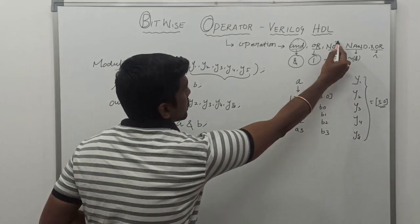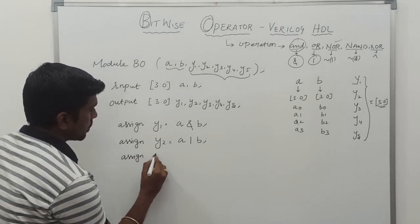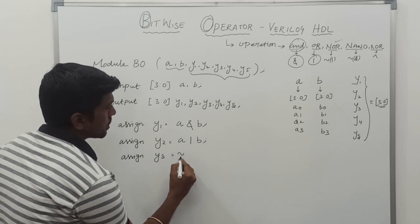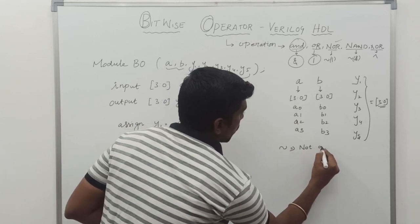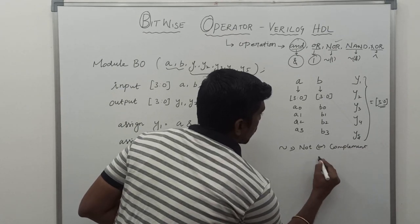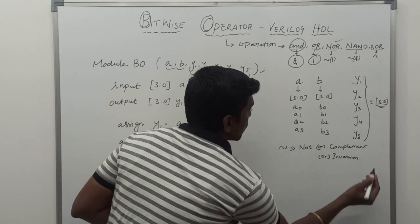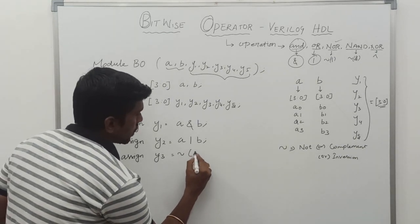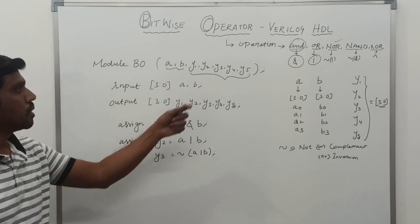The third operation is NOR operation. Assign Y3 equal to — this symbol represents NOT operation, which is complement or inversion. So we are just taking the inversion of OR operation: NOT of A OR B. So it is a NOR function.